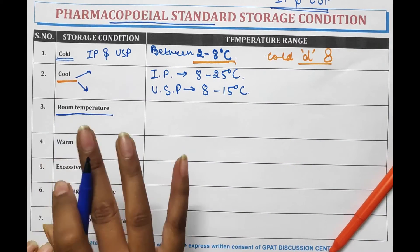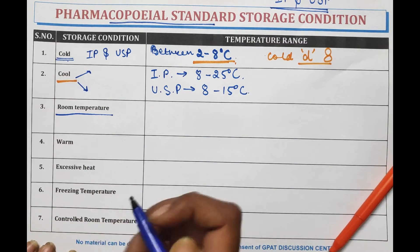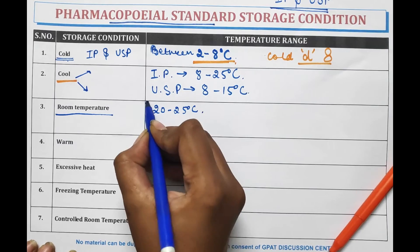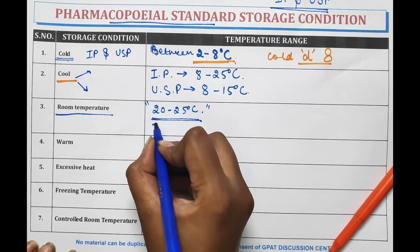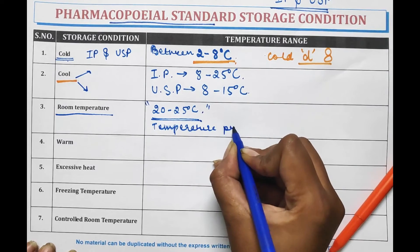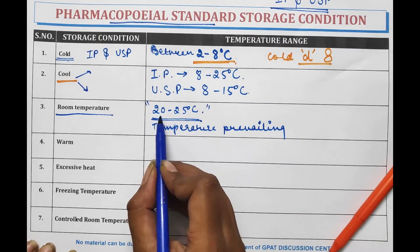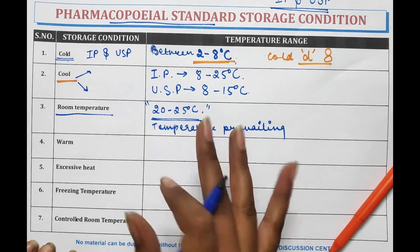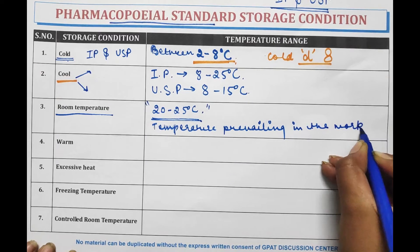Room temperature means that pharmaceutical products should be stored at a temperature between 20 to 25 degrees Celsius, but this range is not specifically mentioned in any Pharmacopoeia. Room temperature is defined as the temperature prevailing in a work area, and we can consider it as a range between 20 to 25 degrees Celsius.